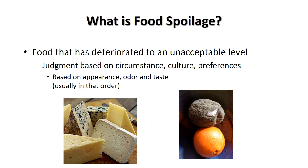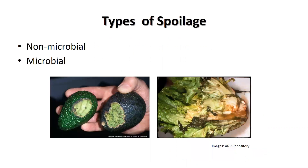The basis for judgment is on appearance, odor, and taste of the food. There are two basic types of spoilage: non-microbial spoilage and microbial spoilage.